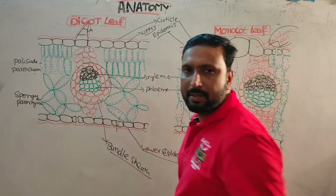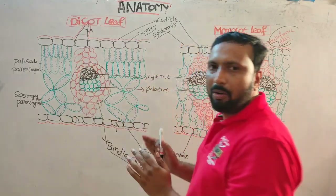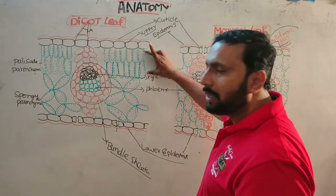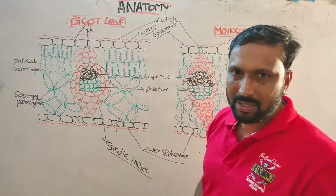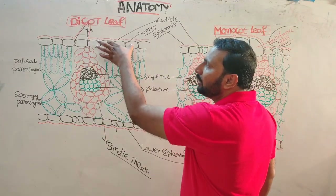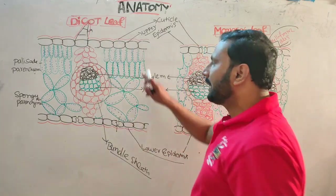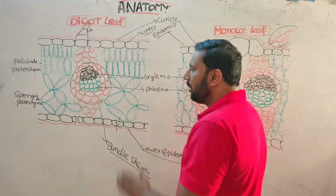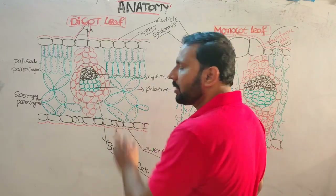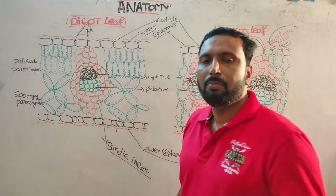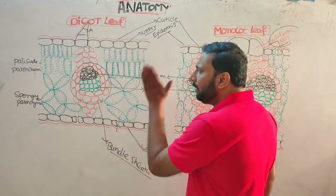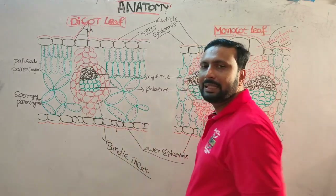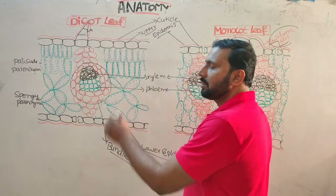Mesophyll cells are made up of parenchymatous cells — two types: palisade parenchyma and spongy parenchyma. Palisade parenchyma consists of pillar-shaped cells below the upper epidermis, containing more chloroplasts and performing photosynthesis. Spongy parenchyma cells are arranged with large intercellular spaces, contain fewer chloroplasts, and the main function is exchange of gases rather than food synthesis.